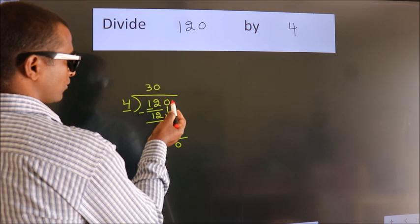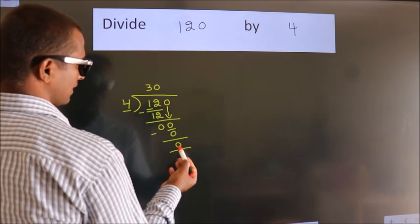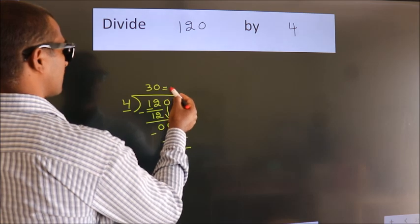After this, no more numbers to bring down. And we got remainder 0. So this is our quotient.